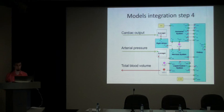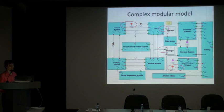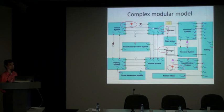Now we are ready to connect those modules, and here it is done. Here we may notice three main connections between those modules. They are cardiac output, atrial pressure, and blood volume — which is divided into two connections just to avoid edge intersections.